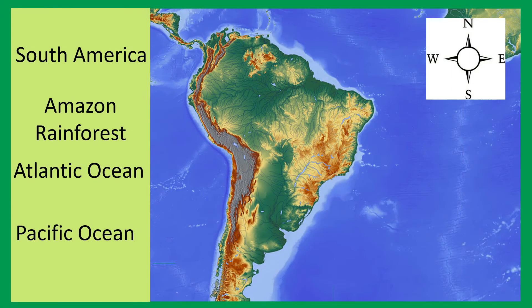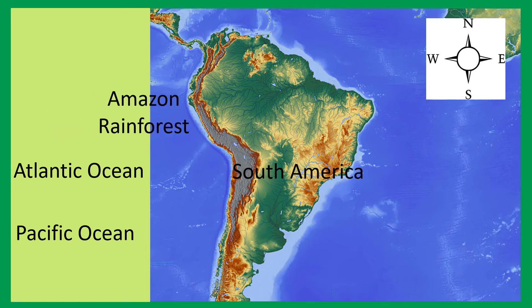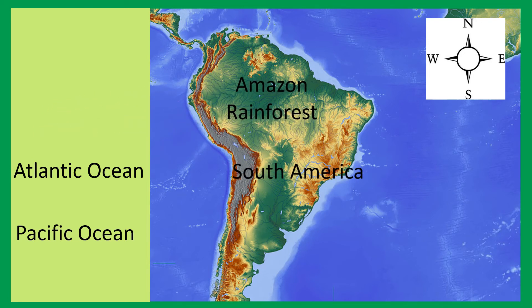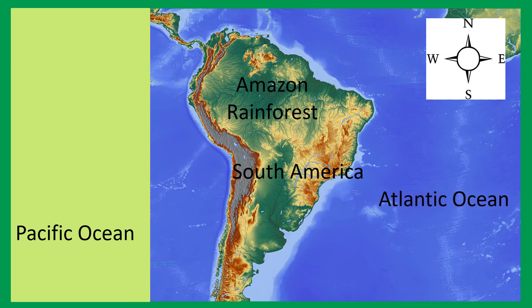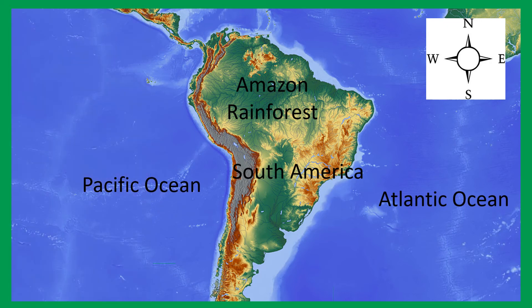Let's label this map. South America is the name of the continent. The Amazon rainforest is an area in South America. The Atlantic Ocean can be found to the east of South America and the Pacific Ocean can be found to the west of South America.